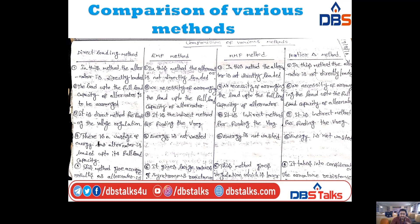Comparing four methods for determining voltage regulation: direct loading method, EMF method, MMF method, and Poitier triangle (ZPF) method. In the direct loading method, the alternator is directly loaded. In the EMF, MMF, Poitier triangle, and ASA methods, the alternator is not directly loaded — these are all indirect methods.